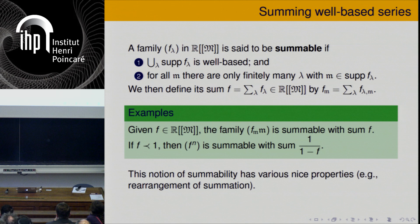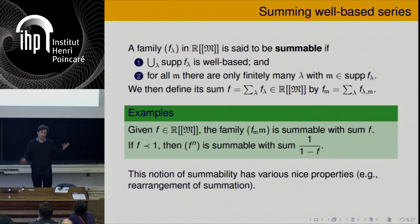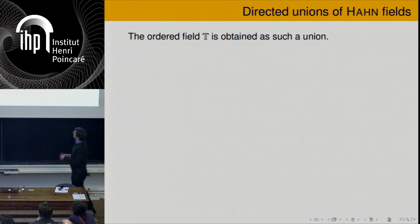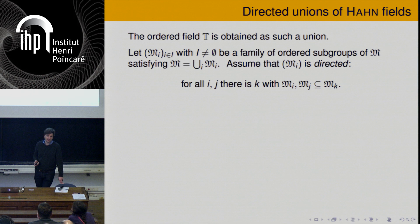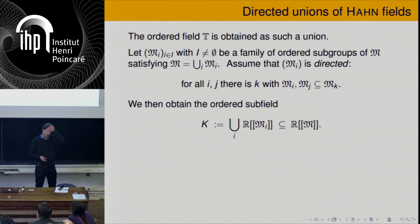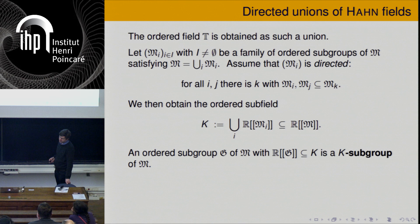This notion of summability has various nice properties — for example, you can rearrange the summation in any way you like. Now, T is an increasing union of Hahn fields. I want to define what a directed union of Hahn fields is. We have a family of ordered subgroups of M whose union is M, and this family is directed, meaning whenever I have any two of these groups, there is a third one containing both of them. Then you obtain an ordered subfield by taking the corresponding union of the Hahn subfields.